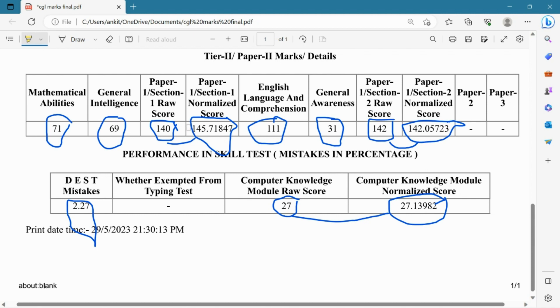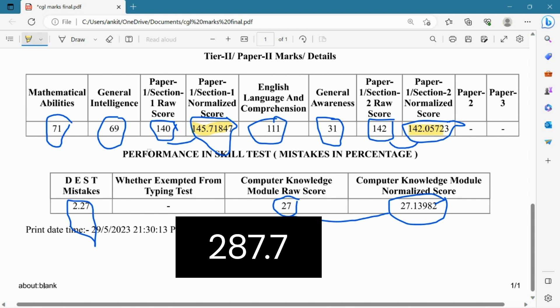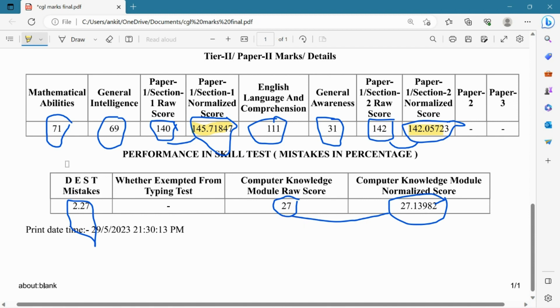My final scores: paper 1 normalization score is 145.7, and paper 2 normalization score is 142.7. If we total it, it is 287.7. Now we are talking about where we can do better and where we have failed.